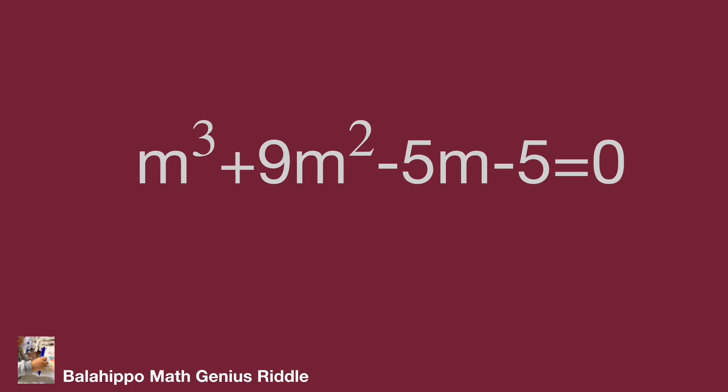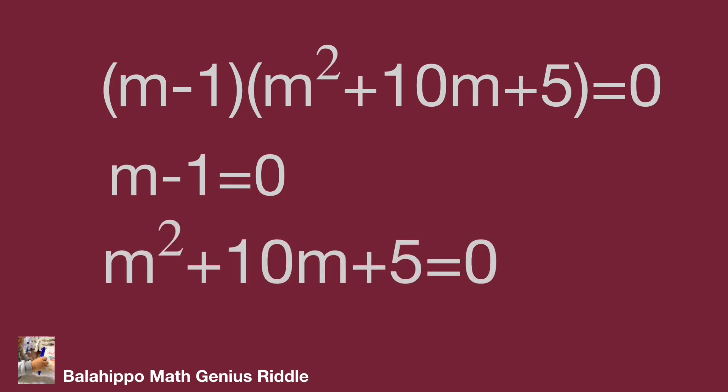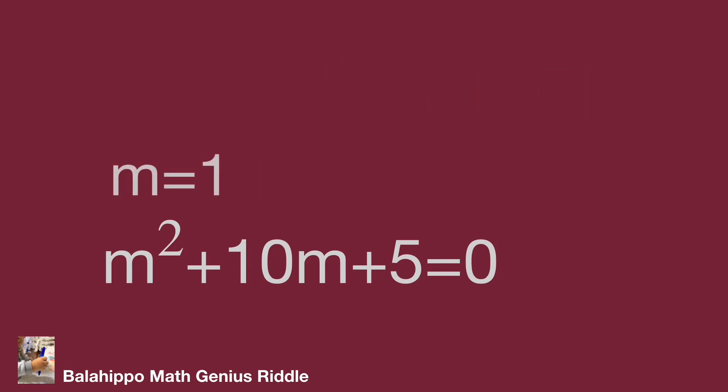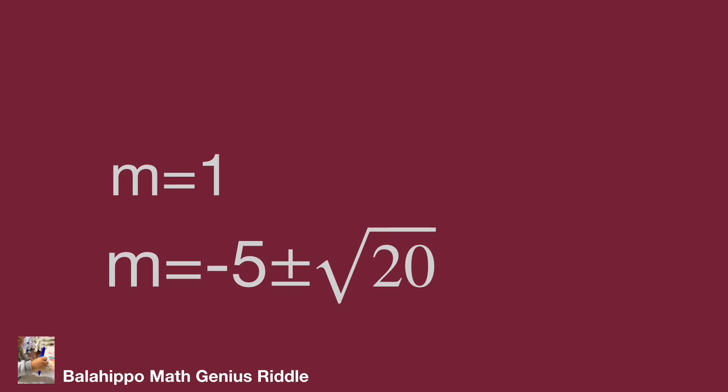Quickly find that if m equals 1 is the answer for this equation. So we factorize the equation as quantity m minus 1 multiplied by m squared plus 10m plus 5 equals 0. So m minus 1 equals 0 and m squared plus 10m plus 5 equals 0. We know m equals 1 already. Then the formula to find x from equation ax squared plus bx plus c: x equals minus b plus minus square root of b squared minus 4ac over 2a. Adapt the formula to m squared plus 10m plus 5. Finally, get m equals minus 5 plus minus square root of 20.